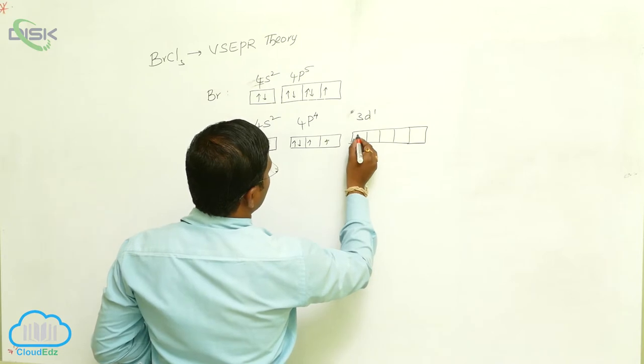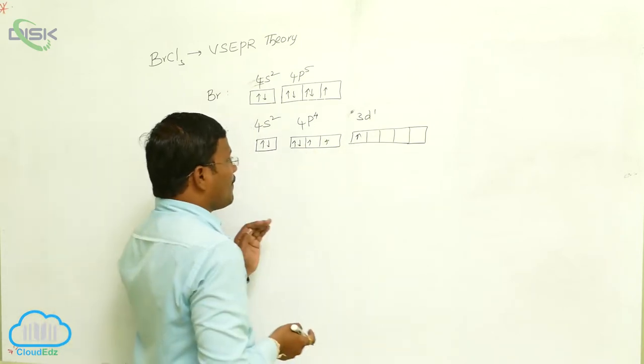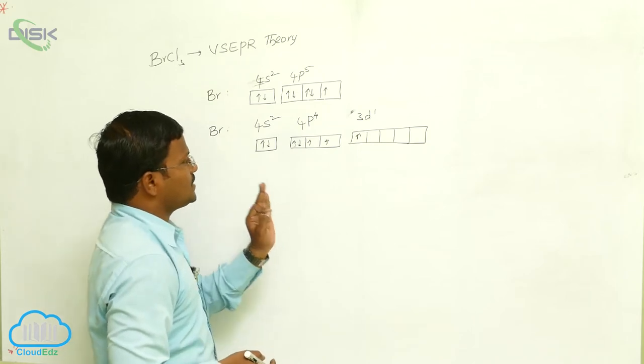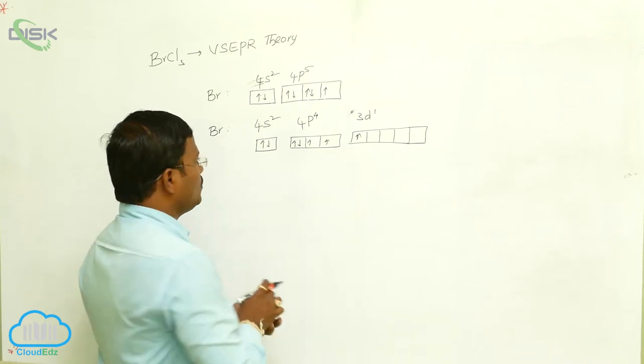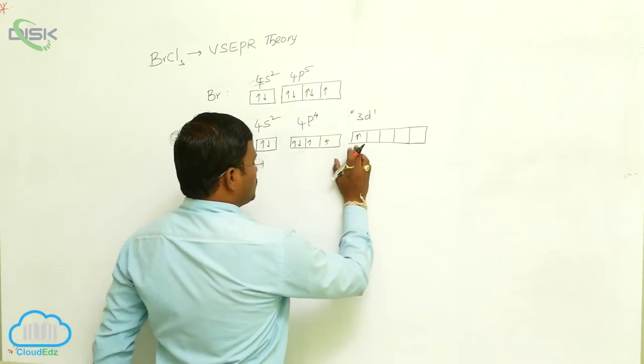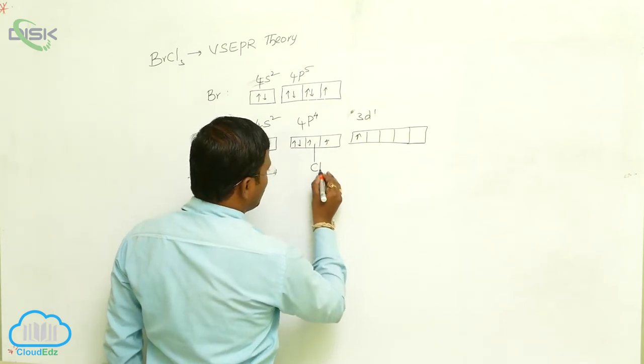In this excited state, there are 3 orbitals with single electrons. These 3 orbitals with unpaired electrons will bind with 3 chlorine atoms.